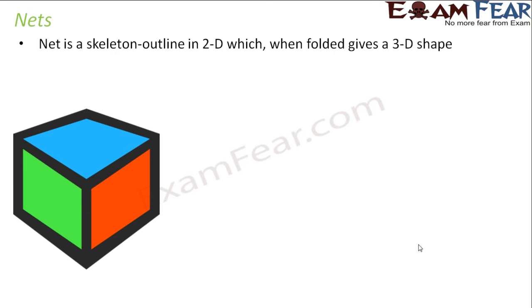So what are nets? Net is a skeleton outline in 2D which when folded gives a 3D shape. So net is basically a technical term given for the skeleton outline in 2D. Like you saw in the previous slide, for the pyramid you had a technical outline in two dimensions that could have been drawn on a sheet of paper. That two-dimensional outline is called net for that pyramid.